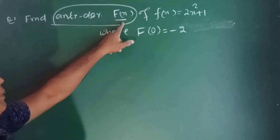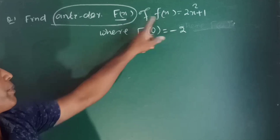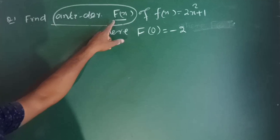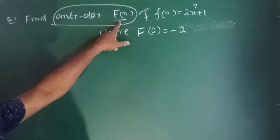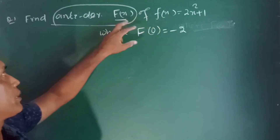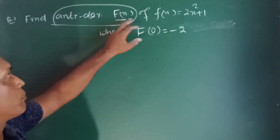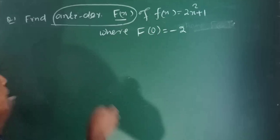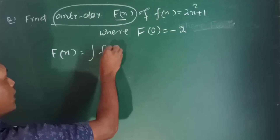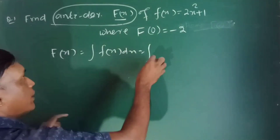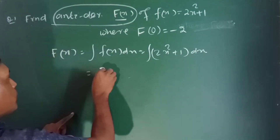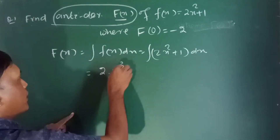We have to find the anti-derivative F of x of small f of x. Capital F of x is the integration, that is the anti-derivative, of small f of x. So F of x is equal to the integration of 2 times x squared plus 1, which equals 2 times x cubed over 3 plus x plus c.